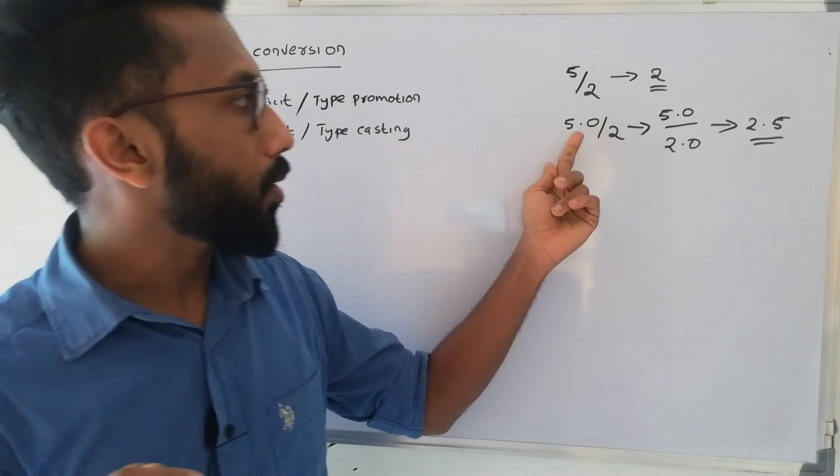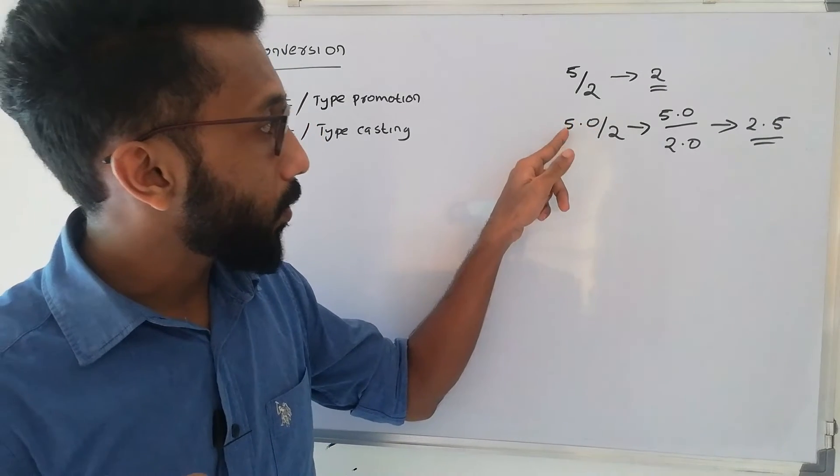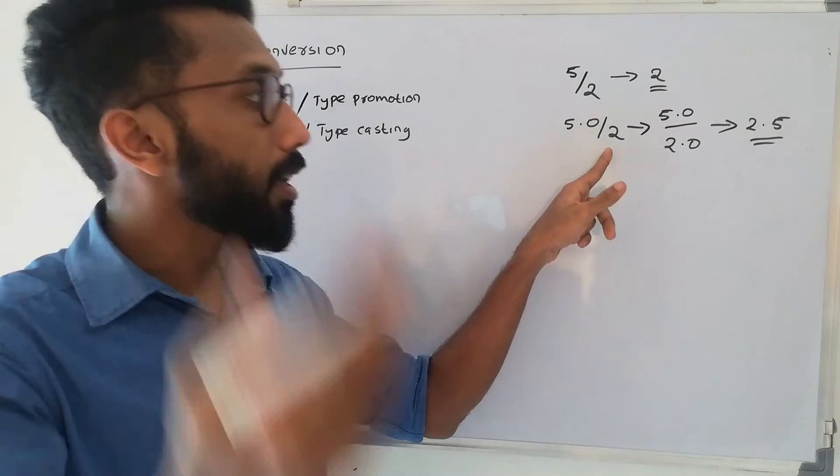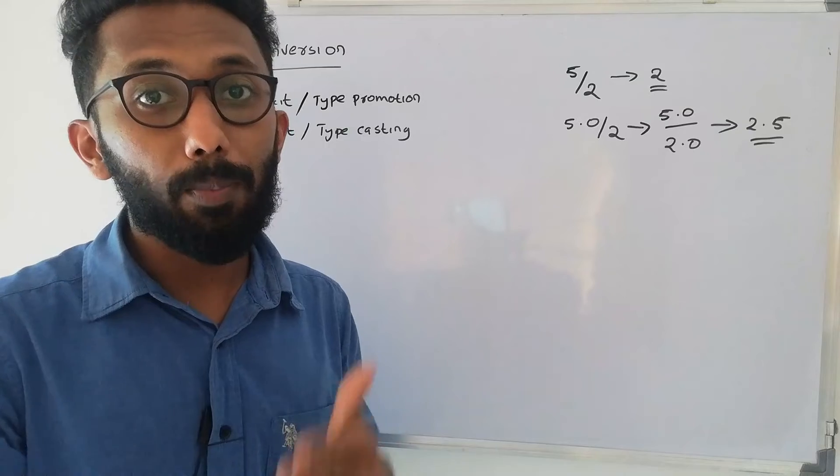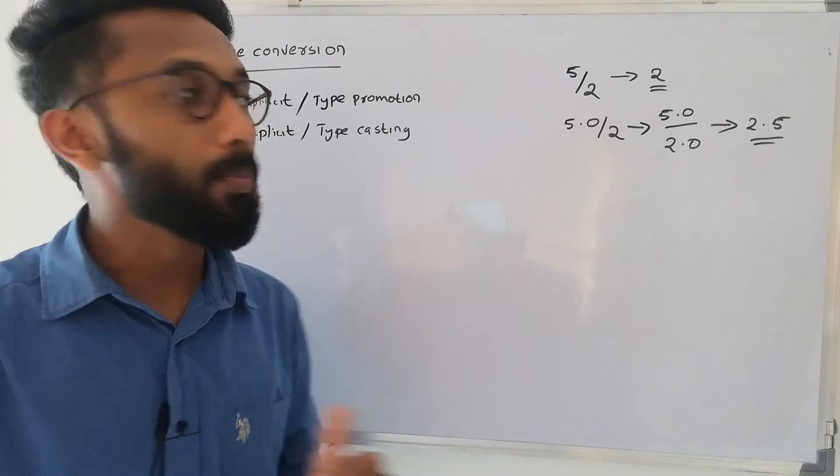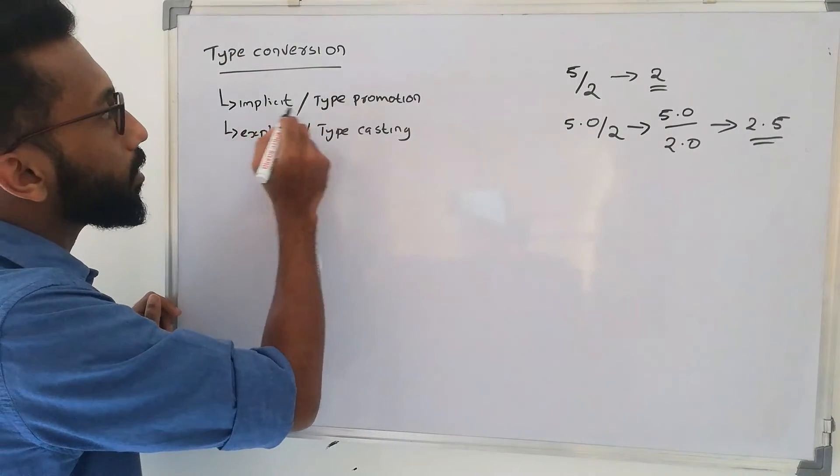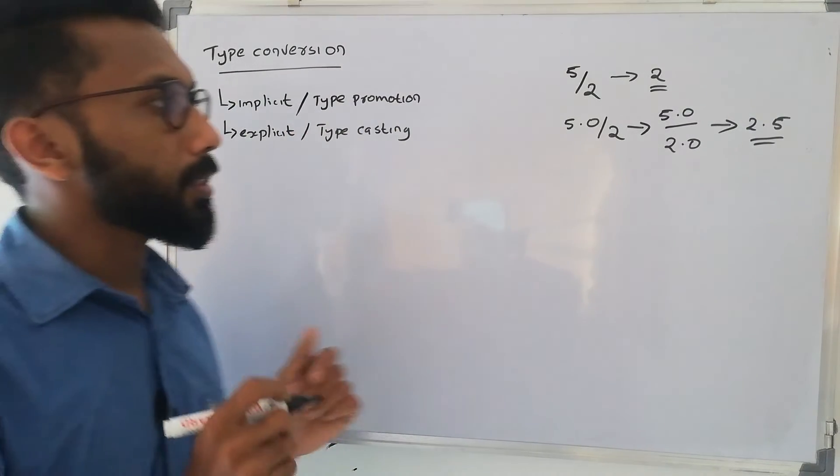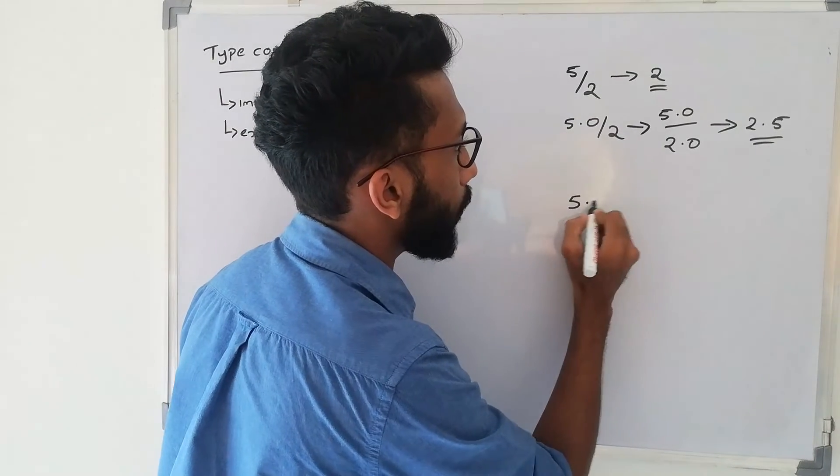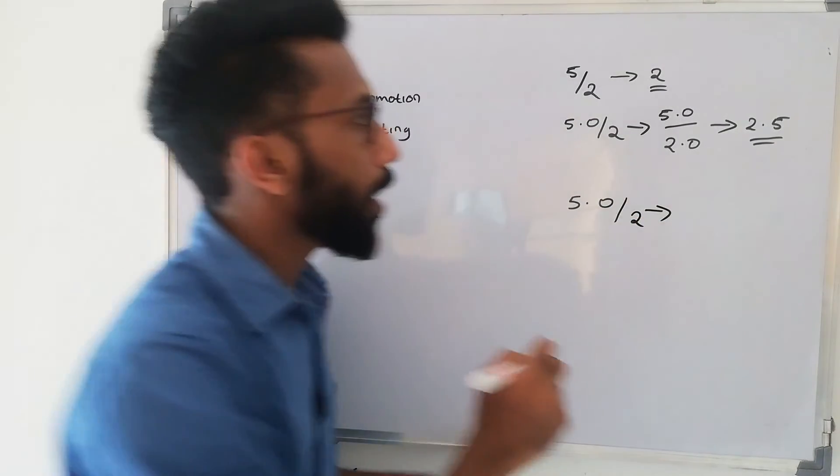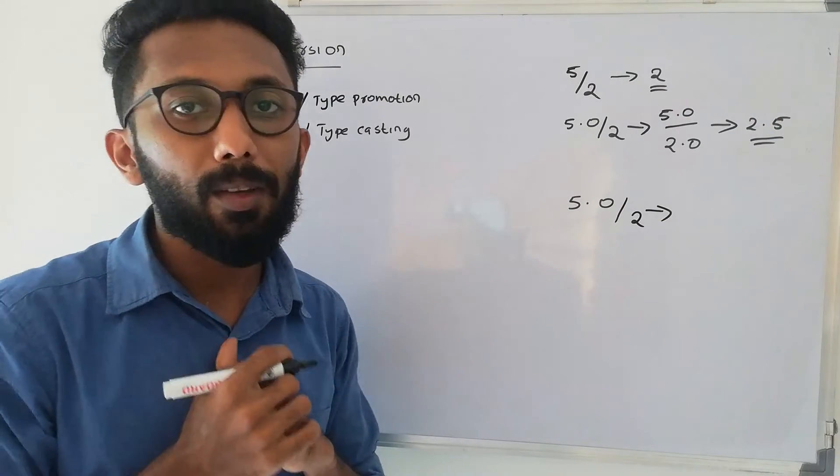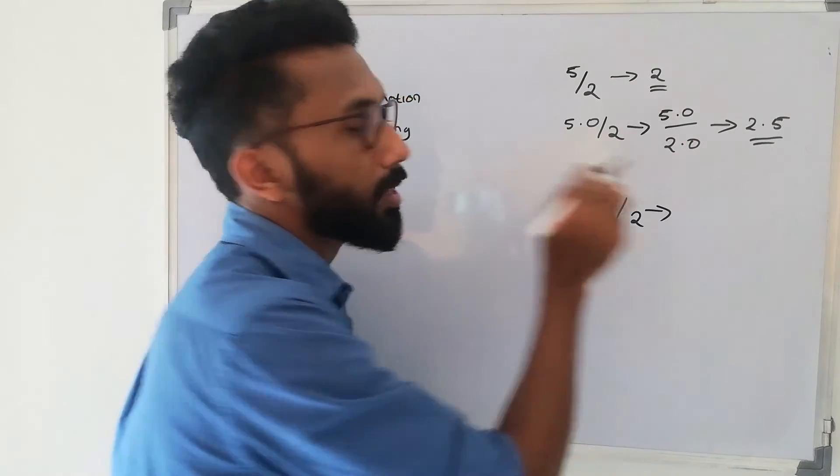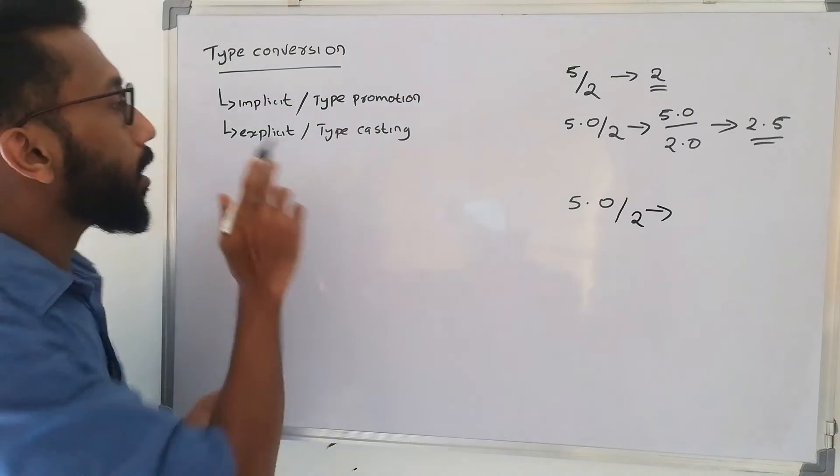Computer does type conversion automatically through implicit conversion. There are two data types, one higher data type and one lower data type. The lower data type is promoted. When we divide by 2, the computer output is 2.5.